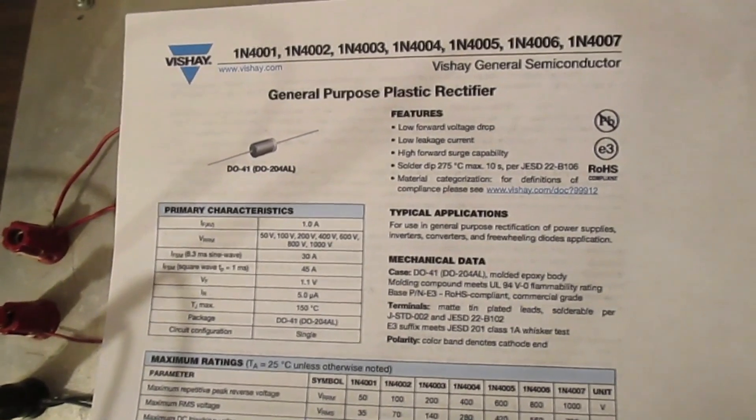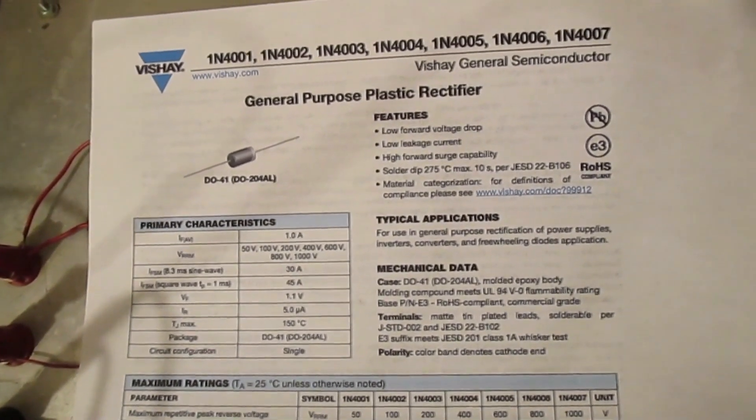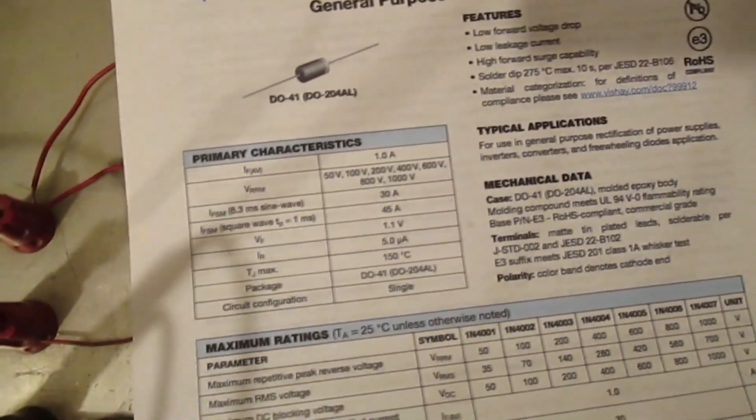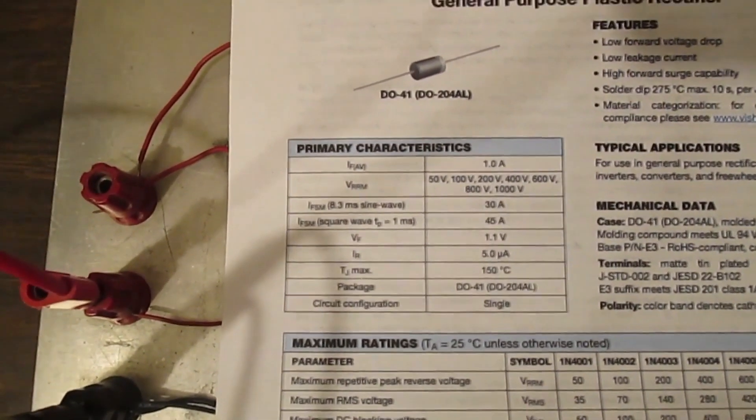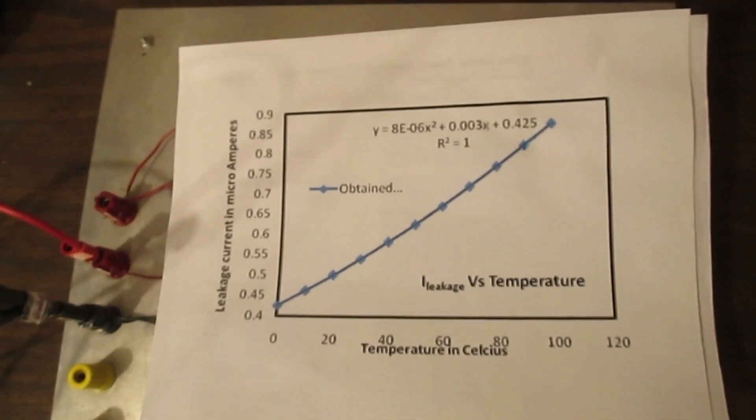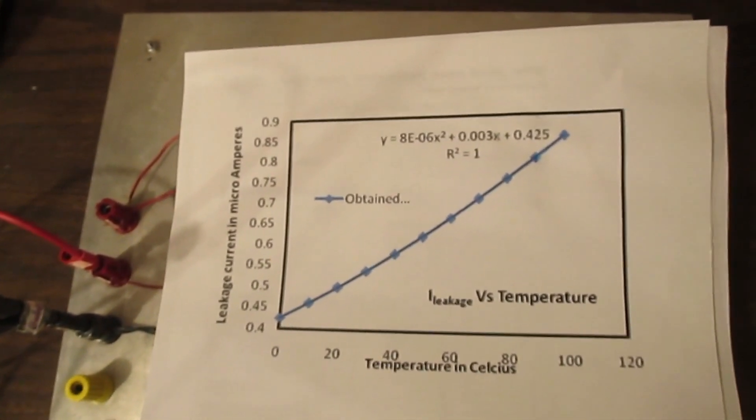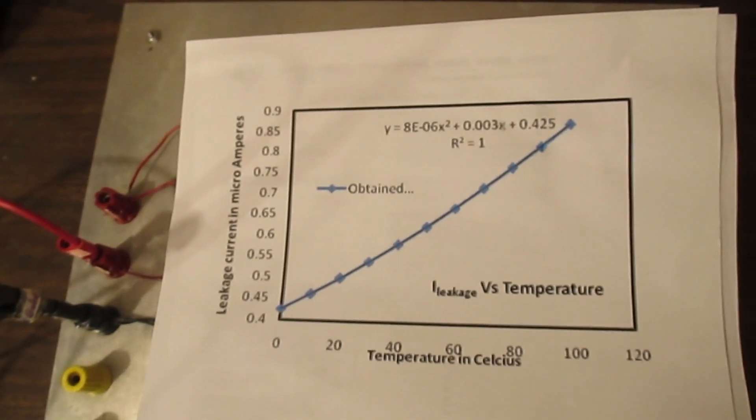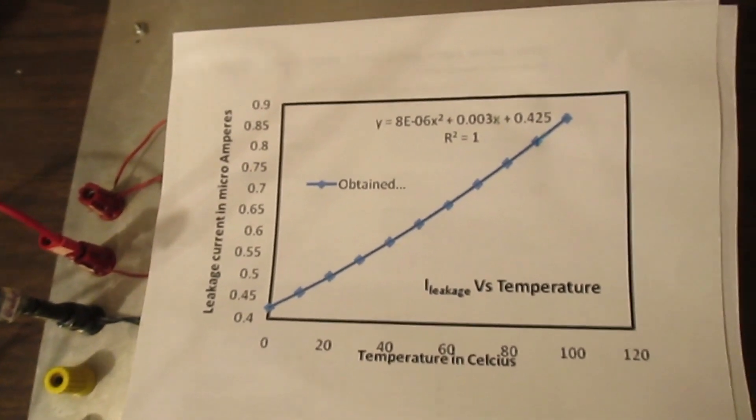On a typical data sheet it'll tell you what the forward voltage drop is and what the typical reverse current is. If you can't find it online, you can always do the science yourself and just measure the reverse current at each temperature and plot it.